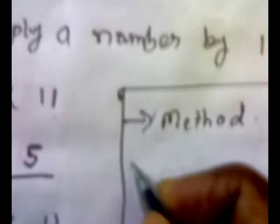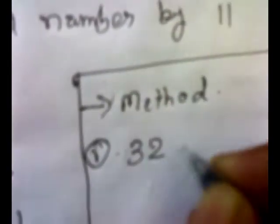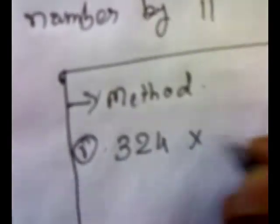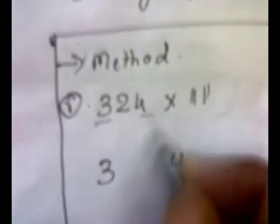Now we will see the method to multiply a 3-digit number by 11. We have multiplied a 2-digit number by 11, so now we will try to multiply a 3-digit number by 11. We will take the first example: 324 into 11. Again, we will put the first and last digit as it is, that is 3 and 4.